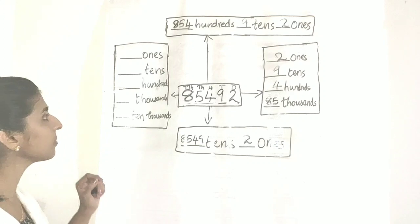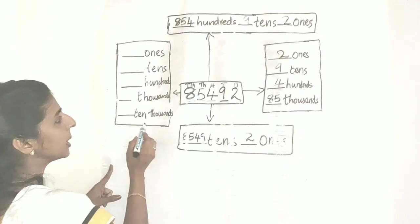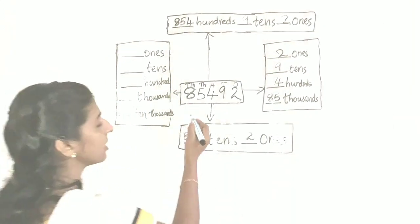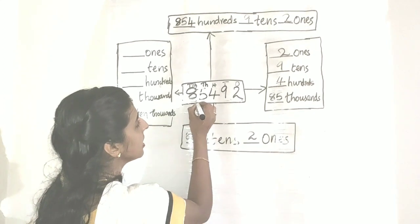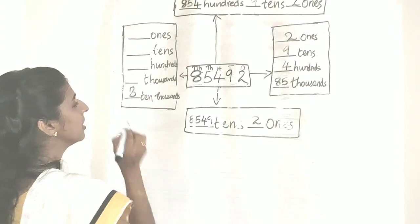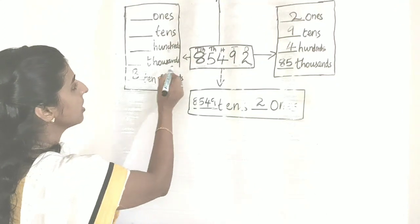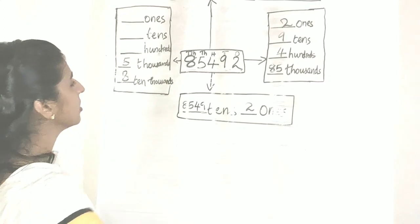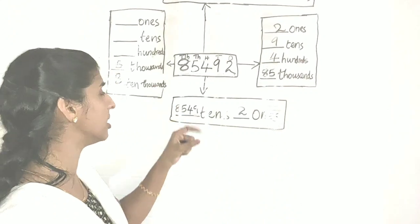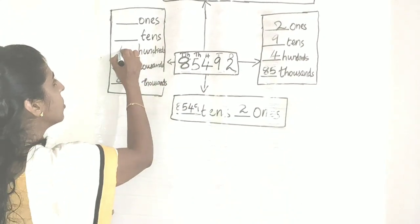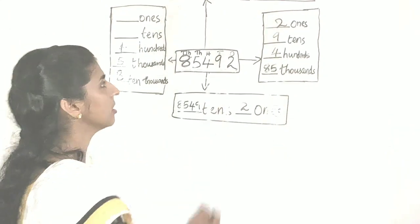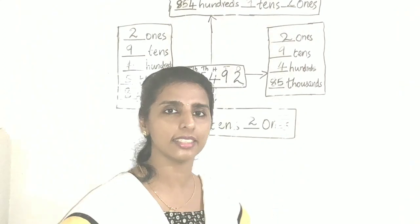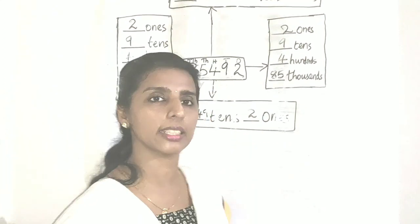Moving to the next form: we use the bigger place, which is ten thousands. Ten thousands place is here — only the digit eight is there, so eight ten-thousands. Then thousands place gives five thousands. Then hundreds: four hundreds. Then nine tens. Then two ones. All places are written. This is the final form of this number. We can practice more problems related to this. Thank you.